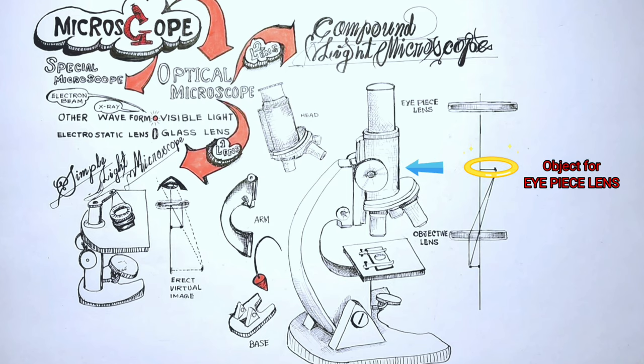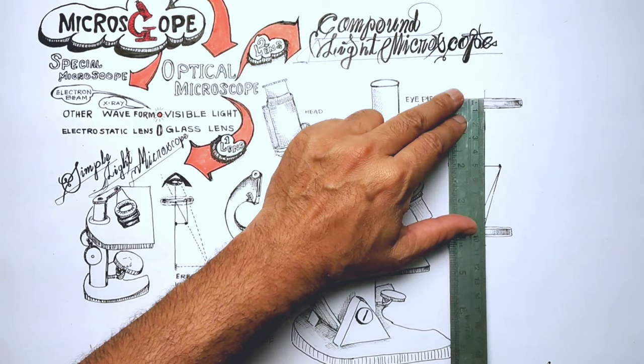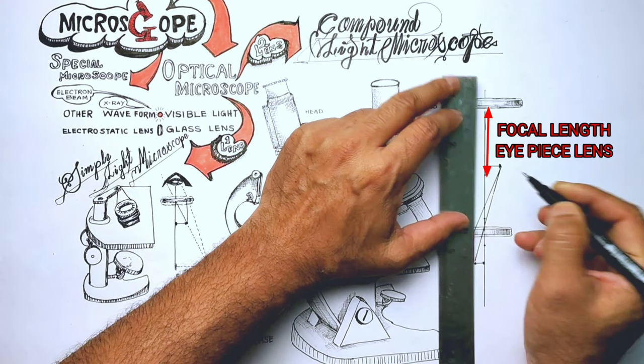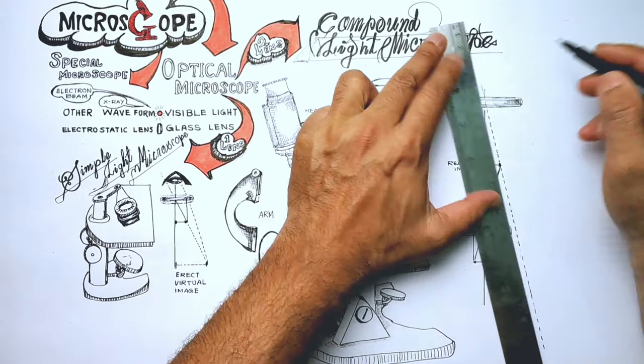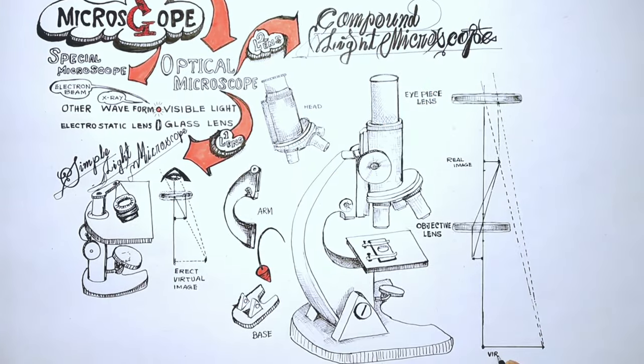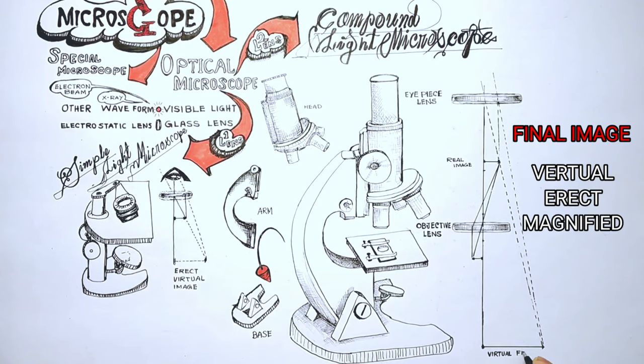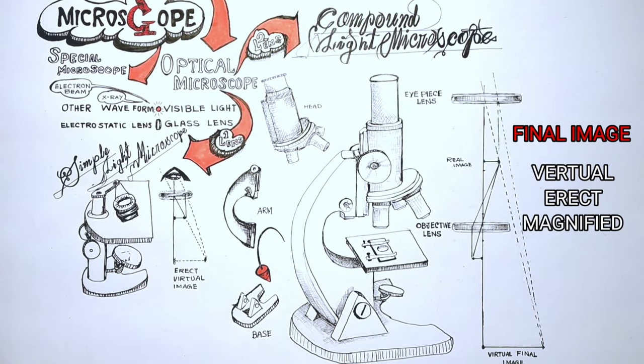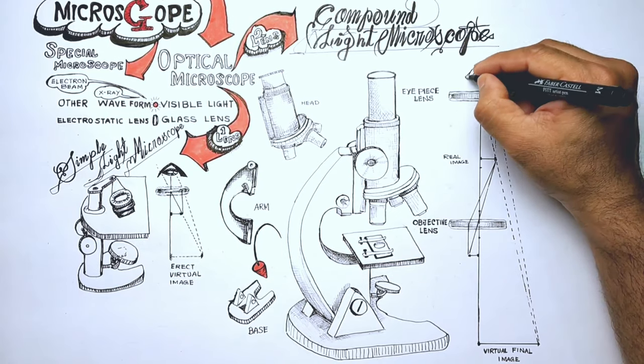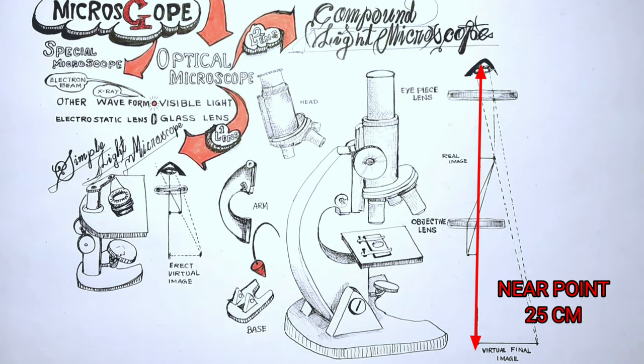This magnified image produced by the objective lens will then act as an object for the eyepiece lens. The eyepiece lens is adjusted in such that the real image lies within the focus of the eyepiece lens. Now, the eyepiece lens functions as a magnifying glass and forms a virtual erect and magnified image of the object. This final image produced by the eyepiece lens will be in the least distance of distinct vision of the observer's eye. That is at the near point or in 25 cm of the observer's eye.